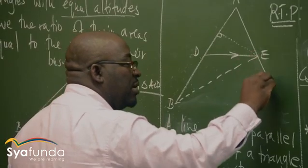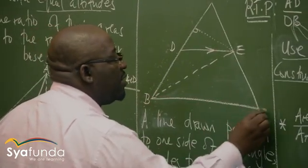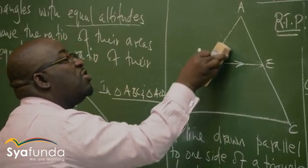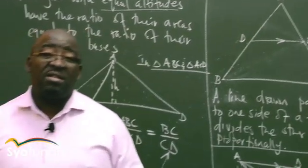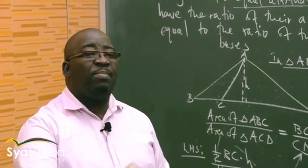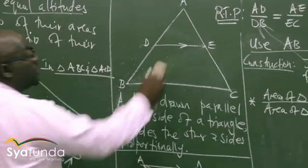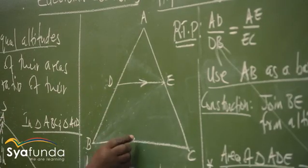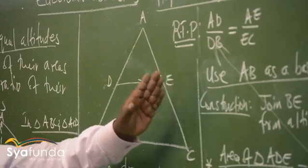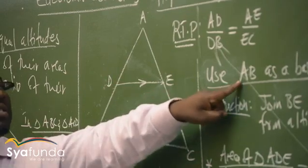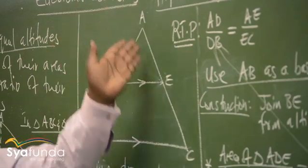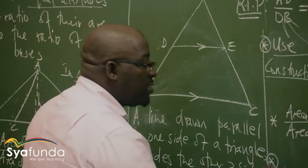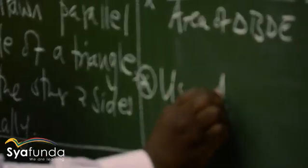Let me take it back to its original state. Remember, we had a triangle and this is what we are given. In the first part, I used AB as a base. Remember, a line drawn parallel to one side divides the other two sides proportionally — it divides this side and this side. I've already used AB as a base; now I've got to use AC as a base.